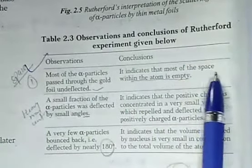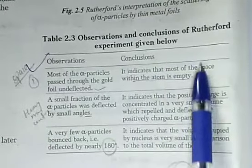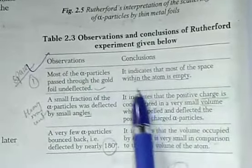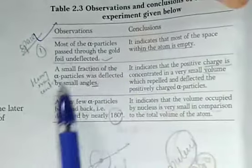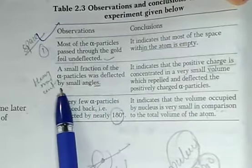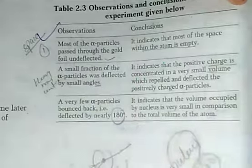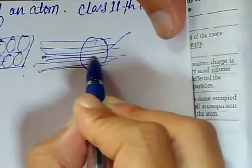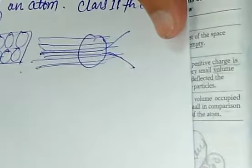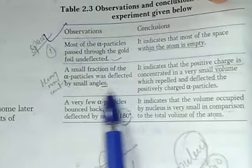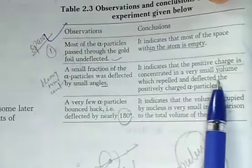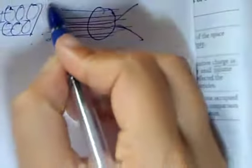It means that most of the space within the atom is empty. The second observation was that a small fraction of alpha particles was deflected by small angles. This indicates that positive charge is concentrated in a very small volume within the atom, which repelled and deflected the positively charged alpha particles.